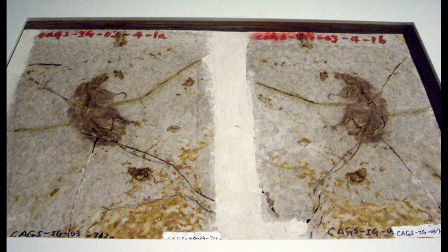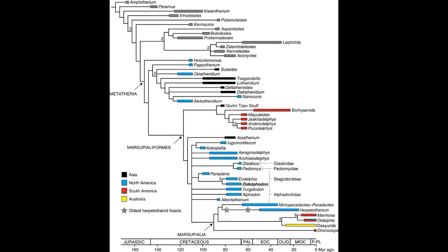The earliest metatherian is possibly Sinodelphus from the early Cretaceous of China, 125 million years ago. However, a paper in the journal Nature by Shundong et al. from 2018 argued that Sinodelphus is a Eutherian instead of a Metatherian. But again, when going this far back in time, the differences between Eutherians and Metatherians are very subtle, so such ambiguities are to be expected. Early Metatherians are known from Central Asia, and they later spread outwards from there, with some ending up in North America, such as Holoclemencia from 110 million years ago. Most Metatherian evolution took place in North America, even though a few migrated back into Asia, such as Delta Theridium.